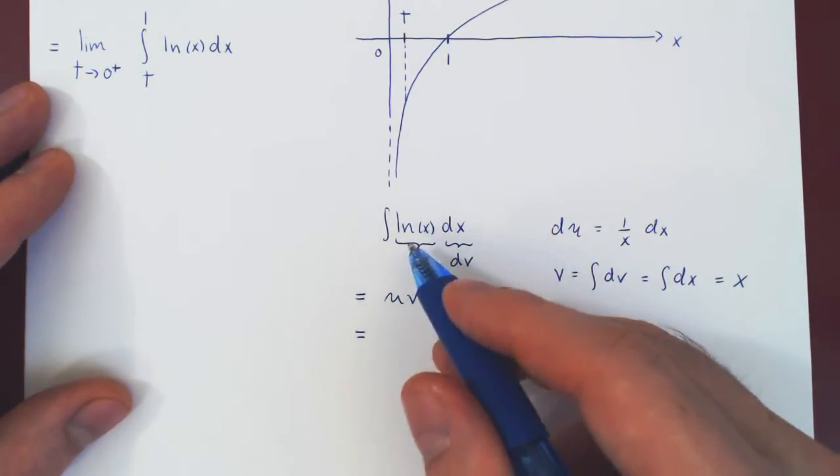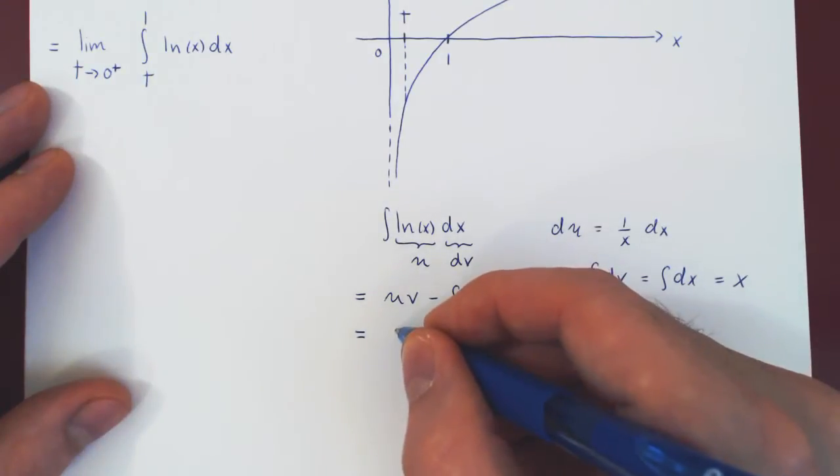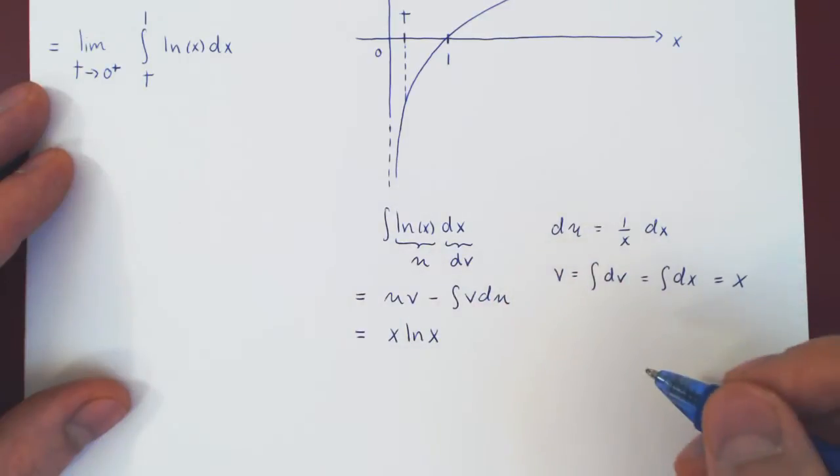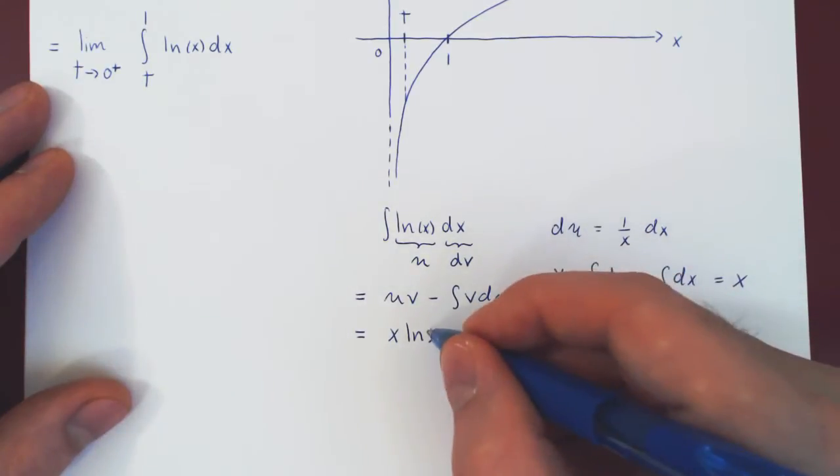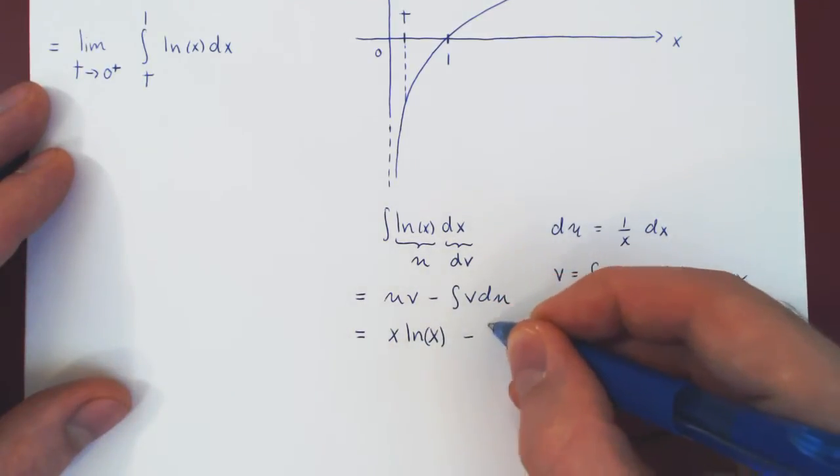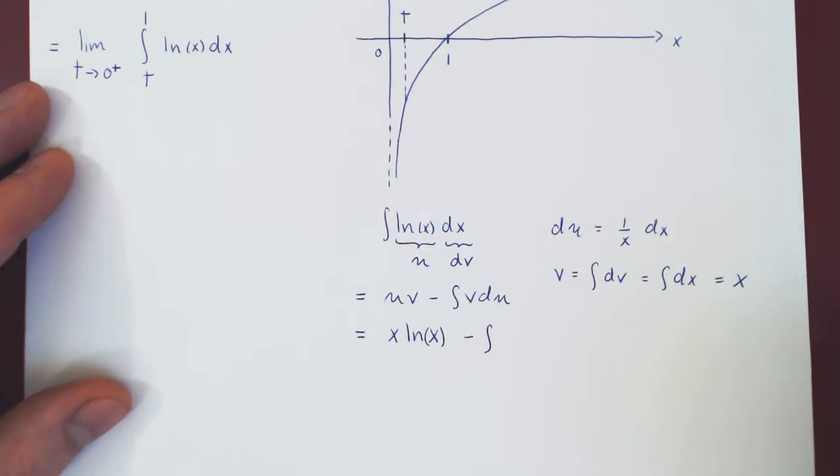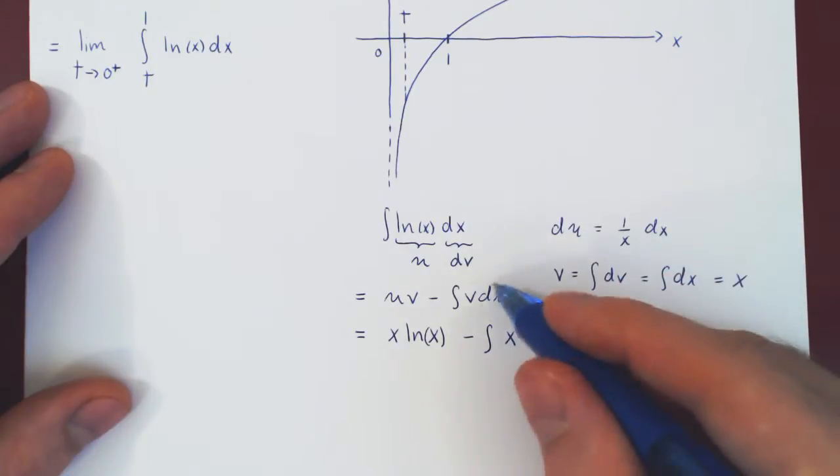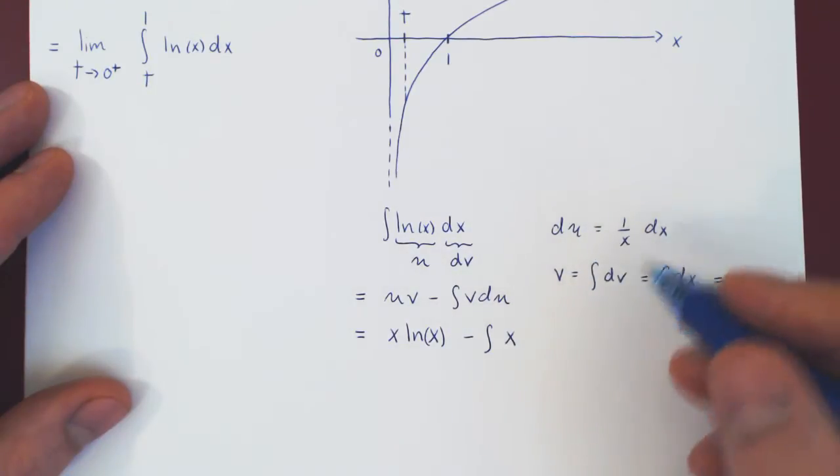u ln of x times v x, so we have, if you prefer in the opposite order, x times ln of x, minus the integral of v, which is x, times du, which is 1 over x dx.